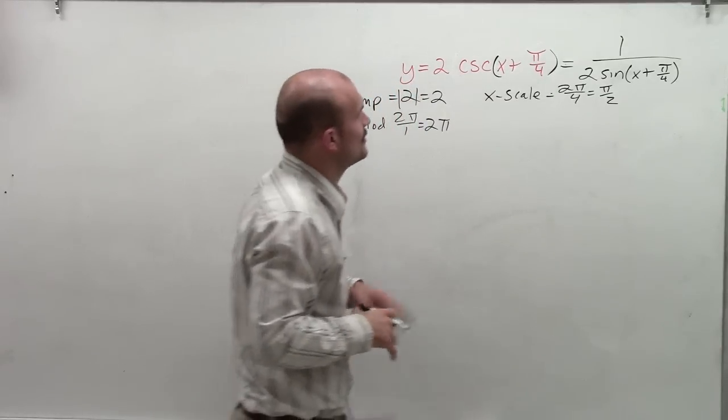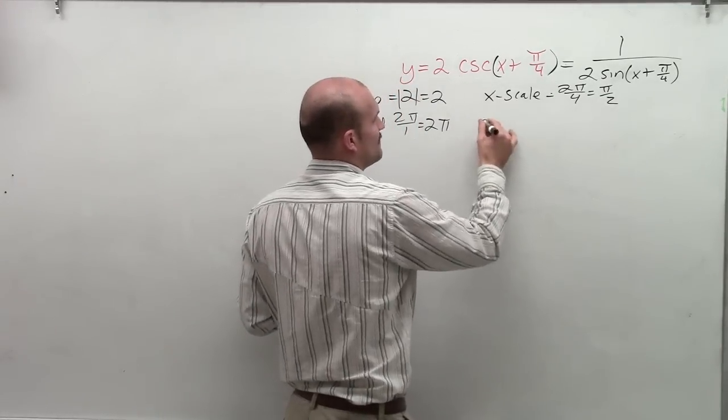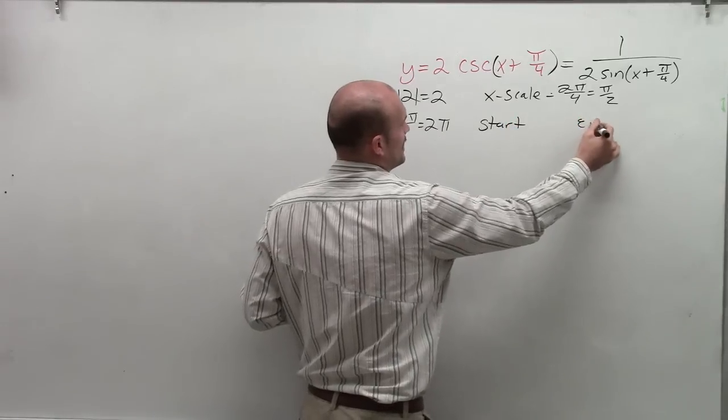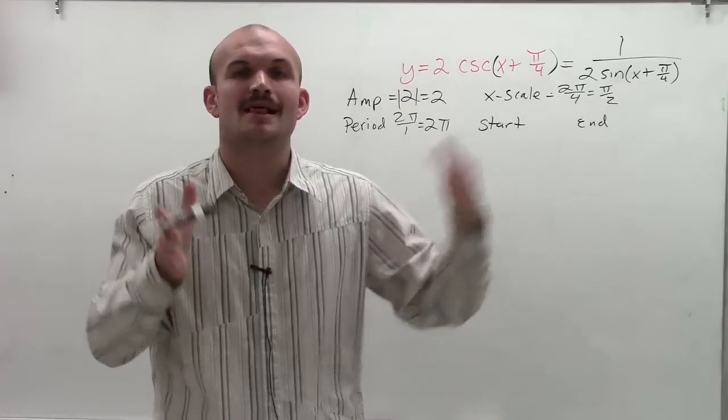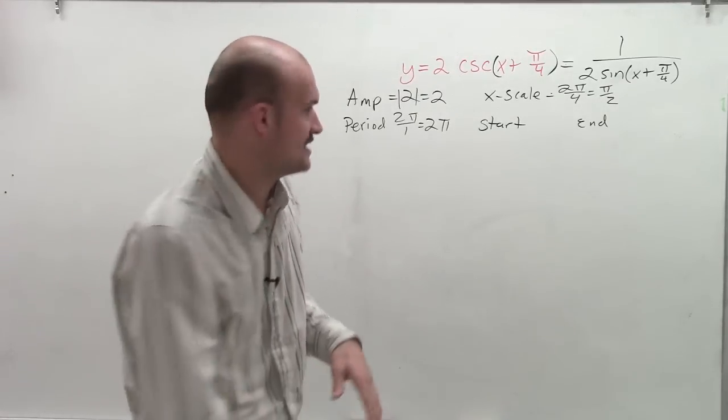And then the last thing I'm going to do is go ahead and find my start and my end. Now, that's the start and the end of my initial period, because I'm going to start off by graphing one initial period. Then I can repeat those periods in the positive negative direction.